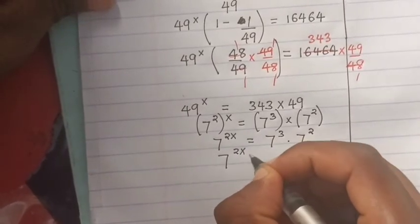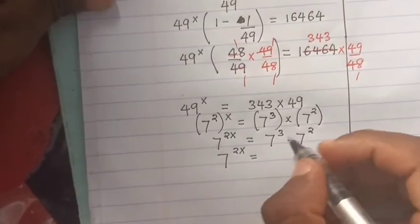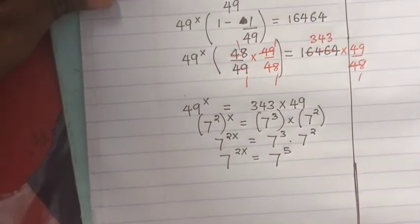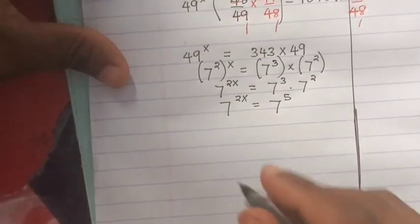2x is the same as 2 plus 3, so it will be 5.